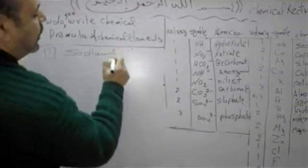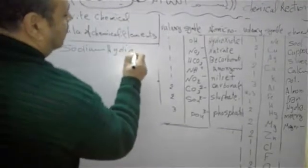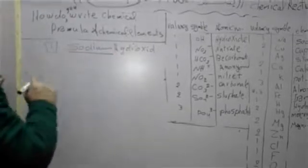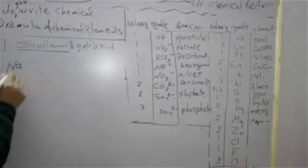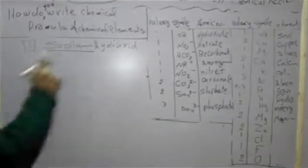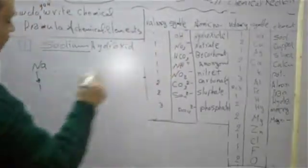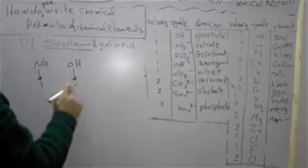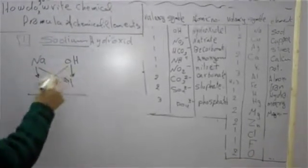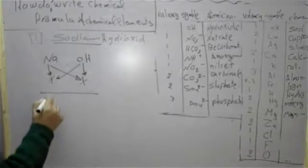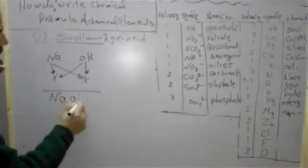Number 1, sodium hydroxide. Sodium hydroxide, H valency 1, monovalent. Hydroxide monovalent. Sodium valency 1, OH 1. 1 by 1. The result is NaOH.